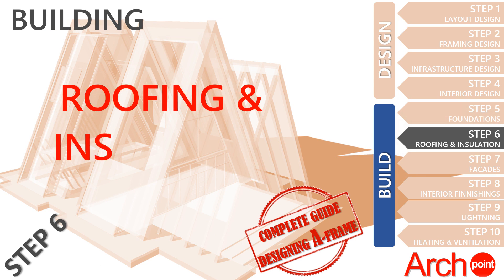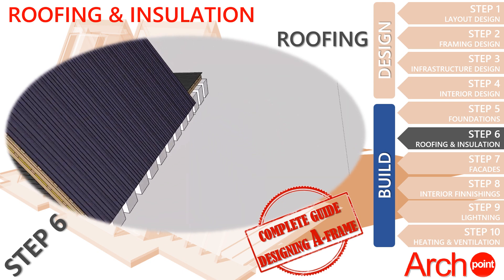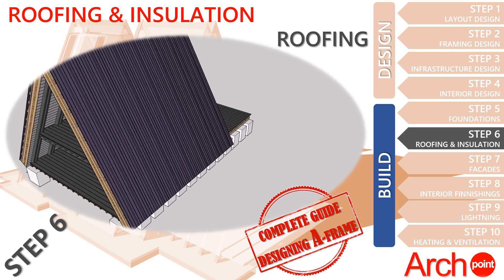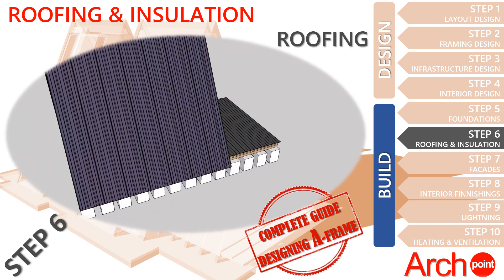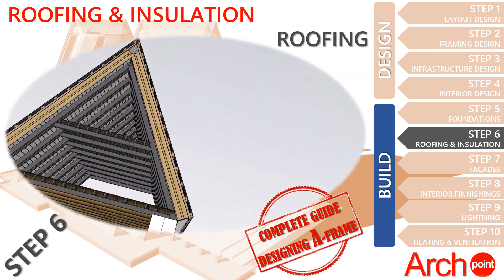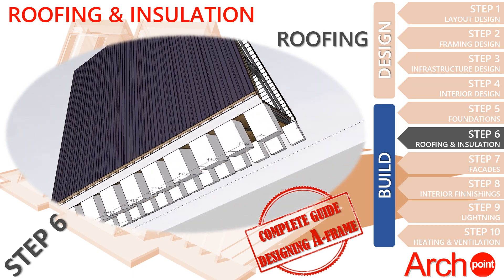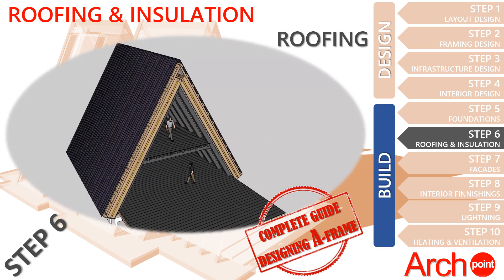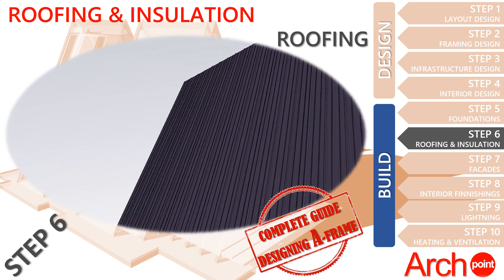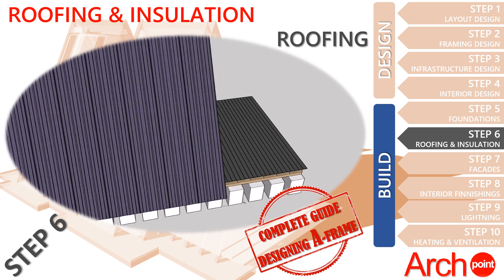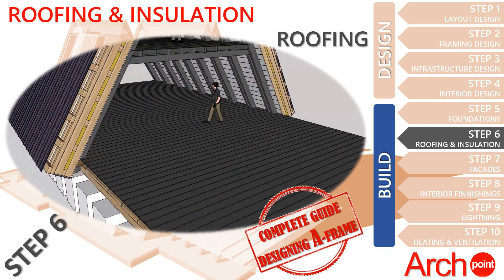Step 6: Roofing and Insulation, as well as Step 7: Facades. We recommend following these two chapters together, because from the design we optimized both the execution and the maximization of thermal insulation efficiency by arranging it horizontally and vertically in four layers of mineral wool. We also recommend using Bilka sheet or similar, ordered in the exact size of the frame. Any horizontal joint in the roof area represents a risk area for infiltration.